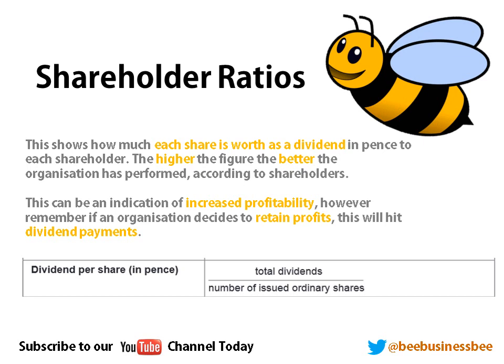Let's have a look at the dividend per share. This shows how much each share is worth as a dividend in pence to each shareholder. The higher the figure, the better the organisation has performed according to the views of the shareholders. Remember, shareholders want bigger dividends because this is a return for the money they've invested in the business — it's a share of the profits. This is typically an indication of the profitability of the business. However, you have to remember that a profitable business may actually pay the shareholders a reduced dividend — for example, if they decide to retain some profits to invest in the future growth of the business.